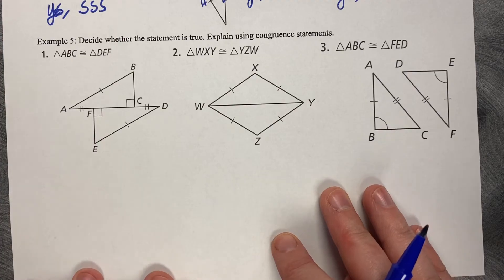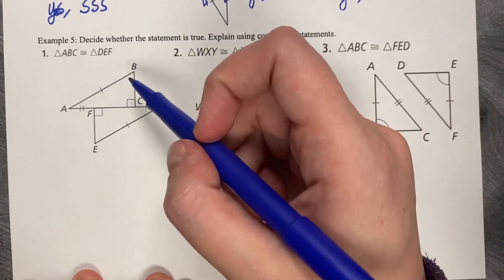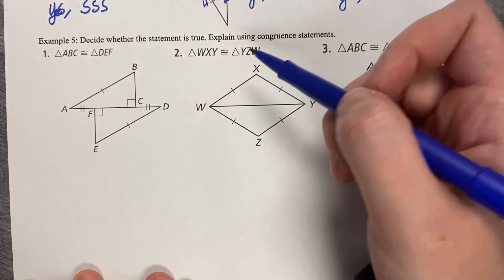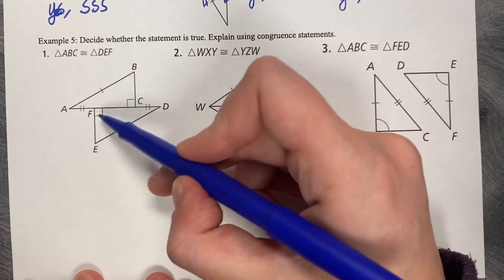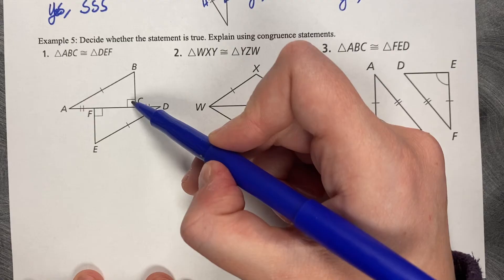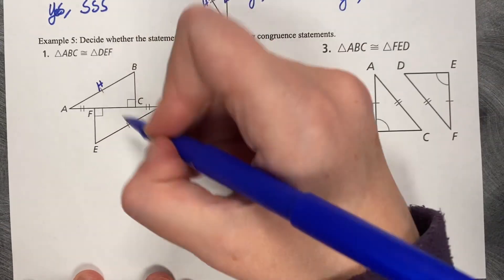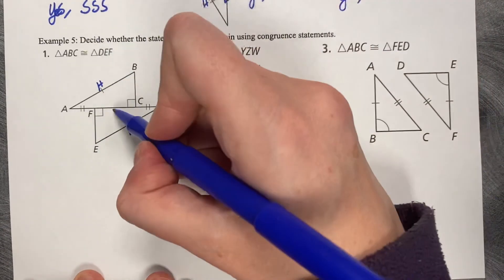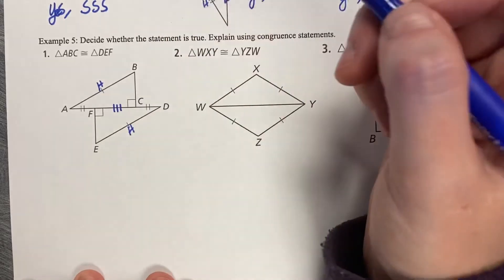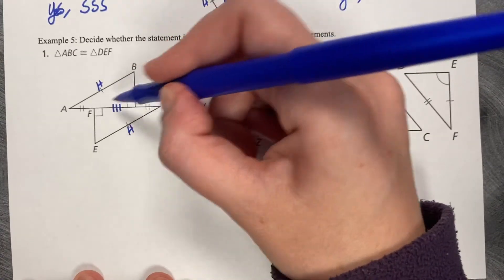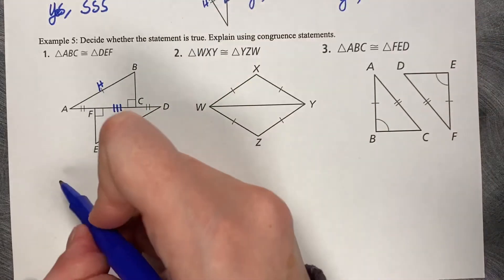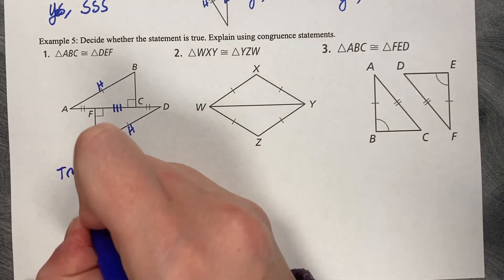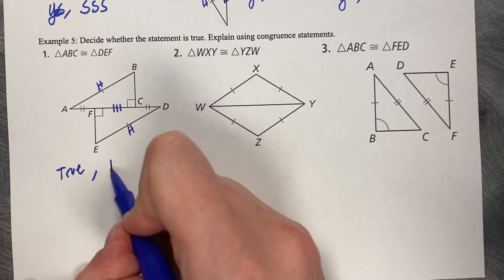This one is asking true or false. Is ABC congruent to DEF? It's a 90-degree angle, so I need a hypotenuse and a leg. My hypotenuses already match. The leg is matching because this FC length is a shared side, and these two smaller lengths match. This is true by hypotenuse leg.